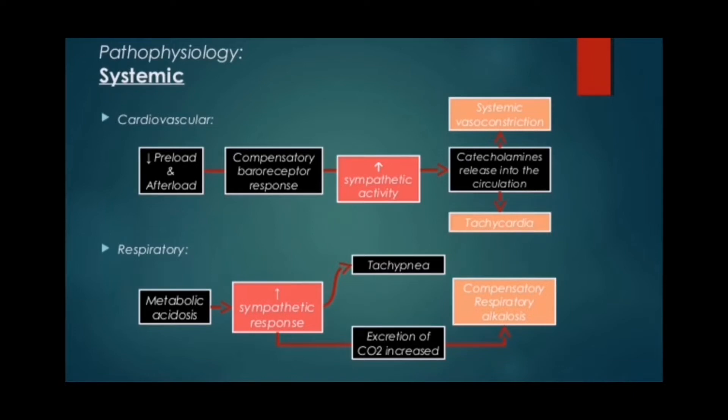At the systemic cardiovascular level, when preload and afterload decrease, there is a compensatory baroreceptor response which leads to increased sympathetic activity. There is a large release of catecholamines into the circulation, causing systemic vasoconstriction and tachycardia.